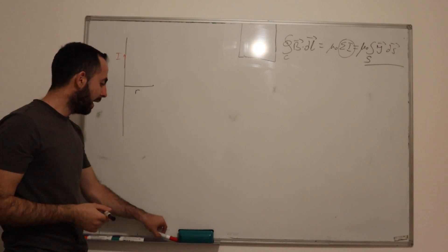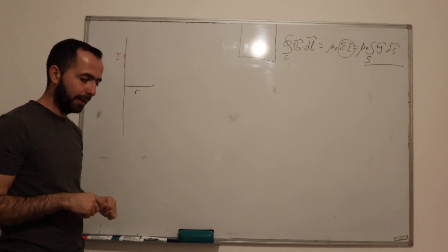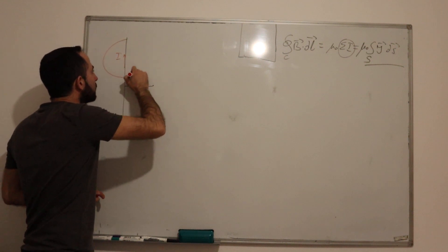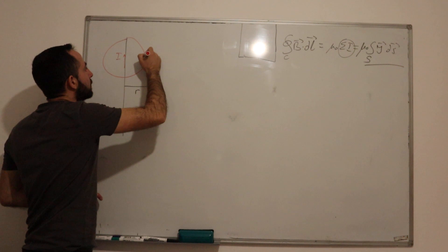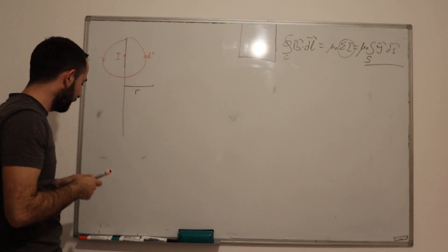Why? Because we have a conductor here with the current I, and this current we know creates a magnetic field in circles.